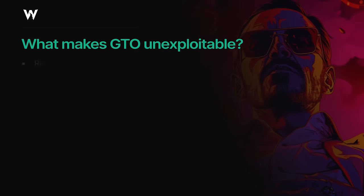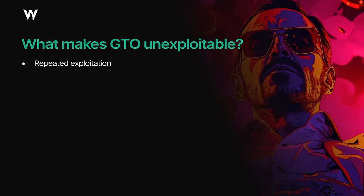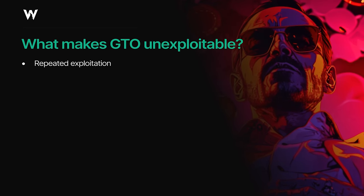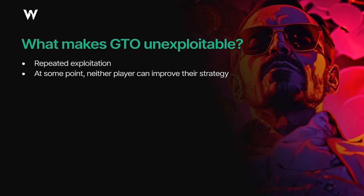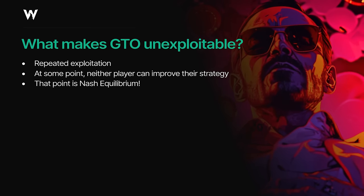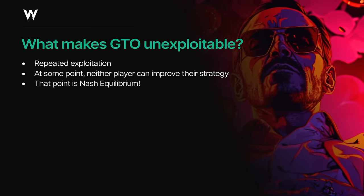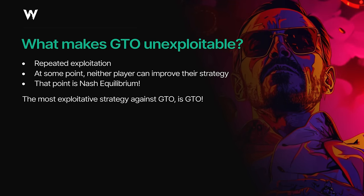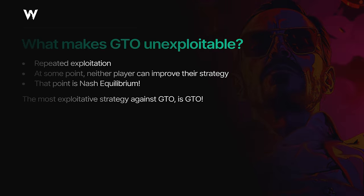This process of repeated exploitation is what makes GTO unexploitable. At some point, neither player can improve their strategy — and that point is Nash equilibrium. This goes to show that the most exploitative strategy against GTO is GTO itself.